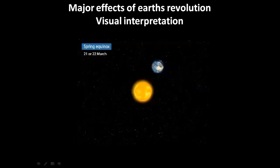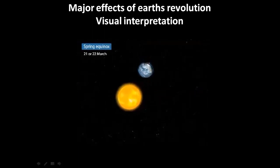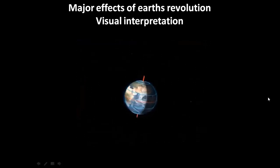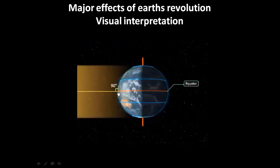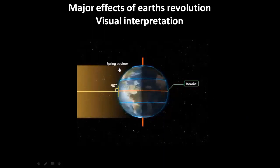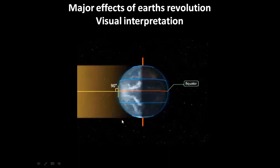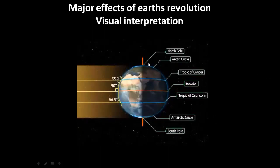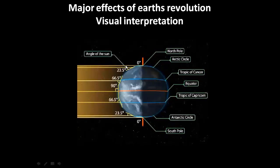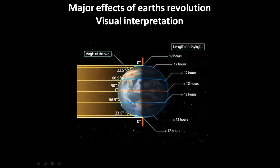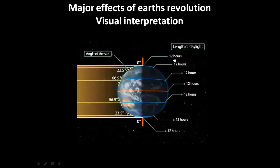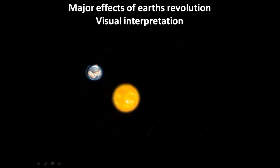Spring equinox, 21st or 22nd March. As you can see, the direct sunlight is falling on the equator at a 90 degree angle. The northern hemisphere will experience spring equinox and the southern hemisphere will experience autumn equinox. These are some of the important latitudes and their angle of sun rays falling on different latitudes. The length of the day will be 12 hours of day and 12 hours of night during spring equinox.